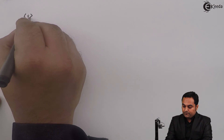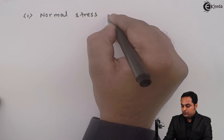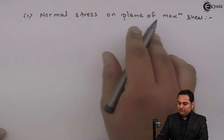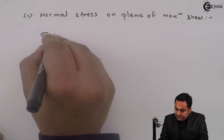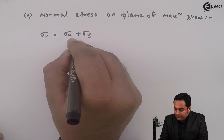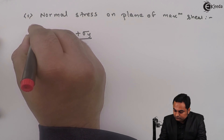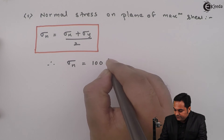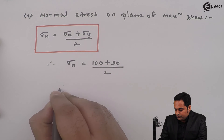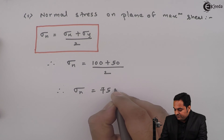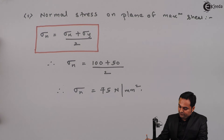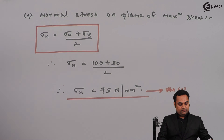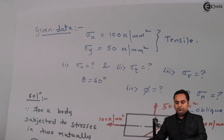Finally, we find the normal stress on the plane of maximum shear. This is given by: (Sigma X + Sigma Y) / 2 = (100 + 50) / 2, which comes out to be 75 Newton per mm square on the plane of maximum shear. This is the fifth answer.